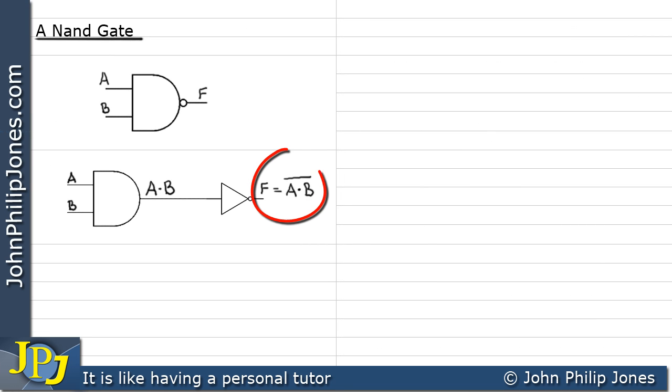Having derived the Boolean expression for the combinational logic circuit, we can now say that the Boolean representation for a two input NAND gate is as follows. It is A and B all NOTted.